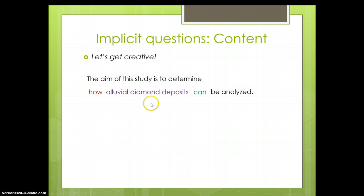No rules about inversion or W-H words or anything. You just have to use your knowledge of what words mean in English and try to figure out some way of phrasing this without forming a question. So let's get started here. The aim of this study is to determine how alluvial diamond deposits can be analyzed. So you're talking how. That's talking about manner. That's talking about methods. So maybe we can change this into a word for method.